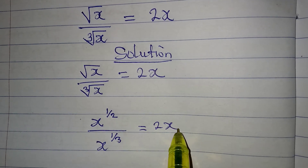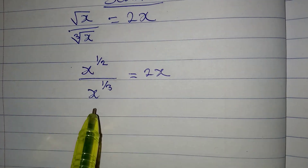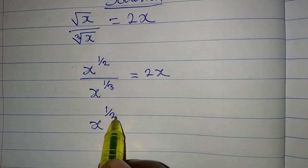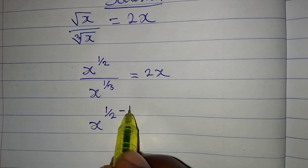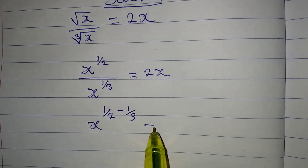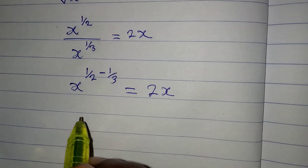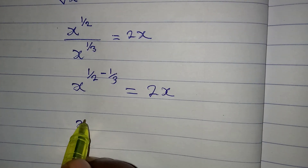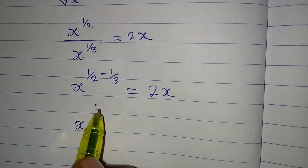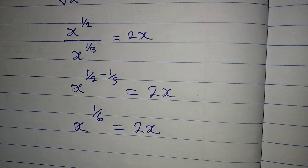This equals 2x. Now, according to the law of indices, since we have the same base and we are dividing, we subtract the powers. So it's going to be 1/2 minus 1/3, which equals 2x. Then 1/2 minus 1/3 gives us 1/6, so x to the power of 1/6 equals 2x.